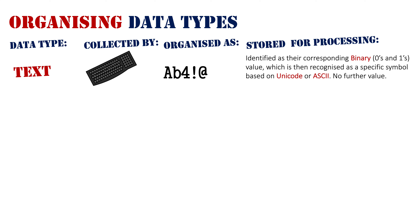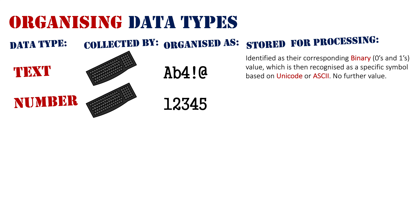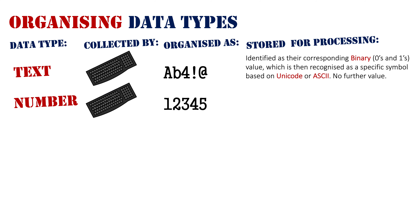Now, I need to make that specific because we're going to move into numbers. A number can be entered by keyboard or keypads. It will go in specifically as 1, 2, 3, 4, 5, 6, 7, 8, 9 or 0, and those combinations obviously make different numbers. The way numbers differ is in how they're stored for processing — they are recognized by the system as having a value, and therefore can be used for calculations and comparisons in conjunction with another numeric value.